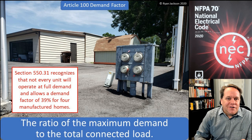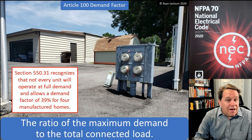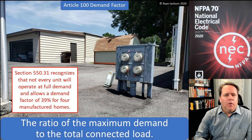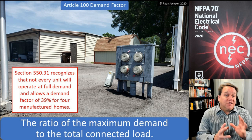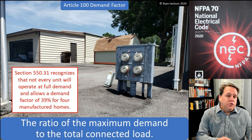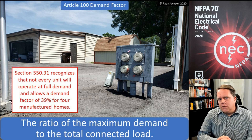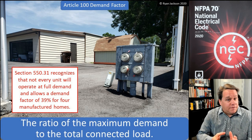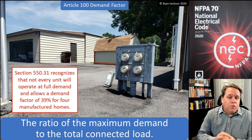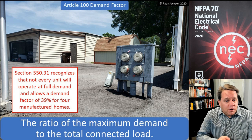Article 100 defines demand factor as the ratio of the maximum demand to the total connected load. Demand factor is something we see a lot in Article 220 for load calculations, and in various other articles as well — for example, Article 550, which covers manufactured homes and mobile homes.